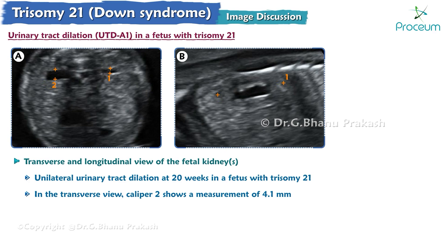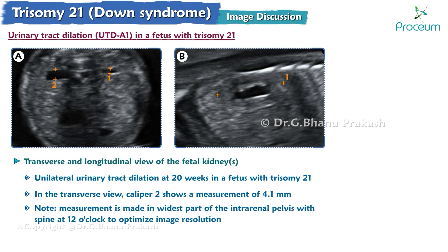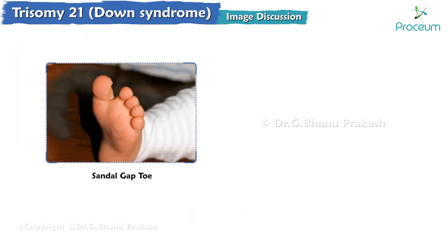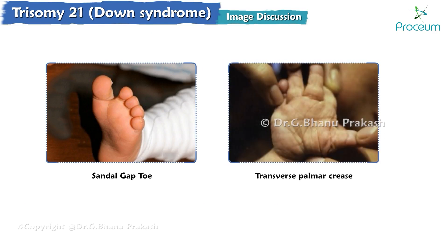In the transverse view, caliper 2 shows a measurement of 4.1 millimeters. Note that the measurement is made at the widest part of the intrarenal pelvis with the spine at 12 o'clock to optimize image resolution. Here is an image showing a sandal gap toe in Down syndrome, and an image showing a transverse palmar crease.